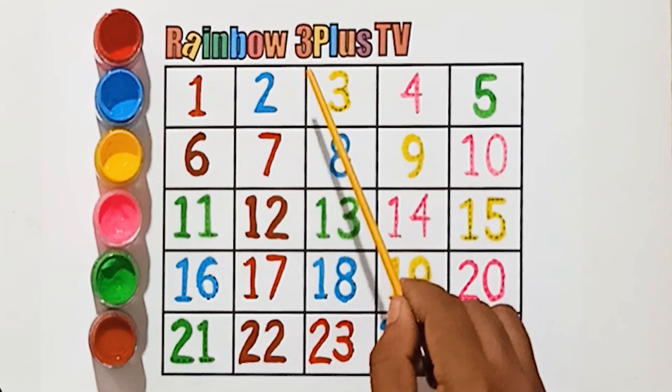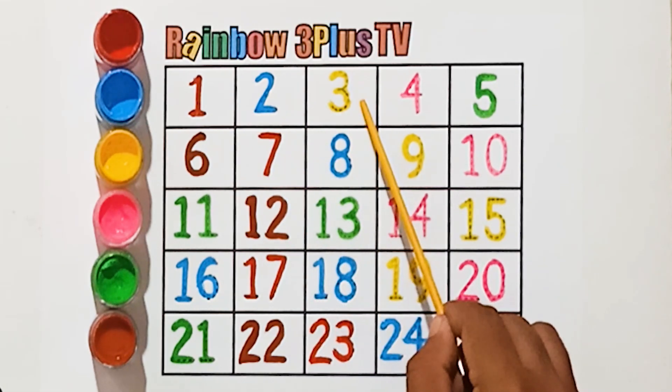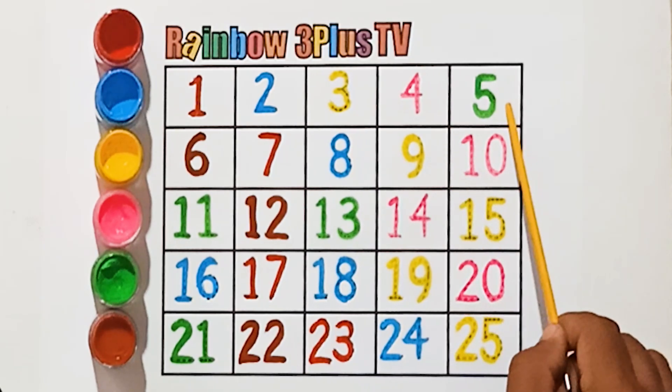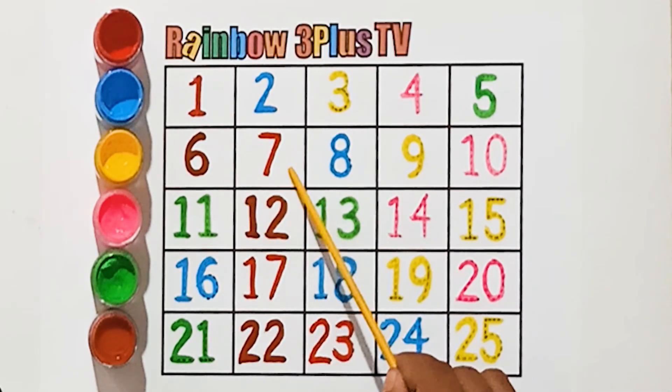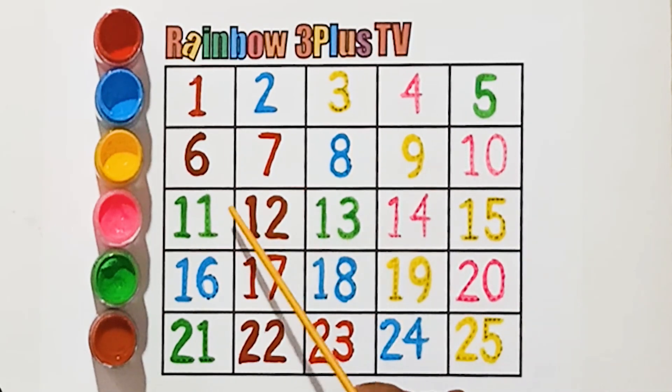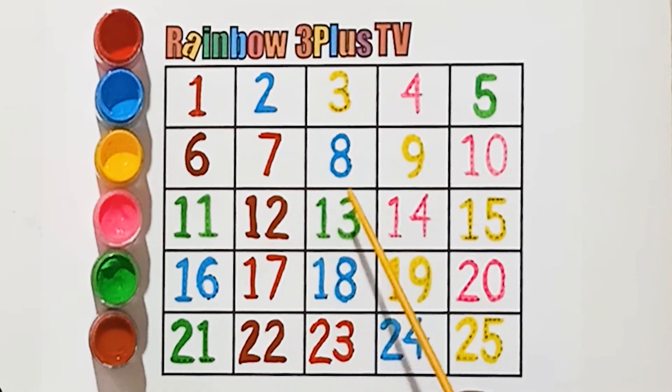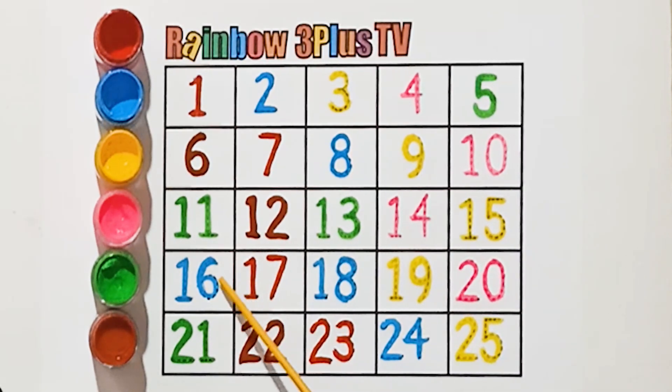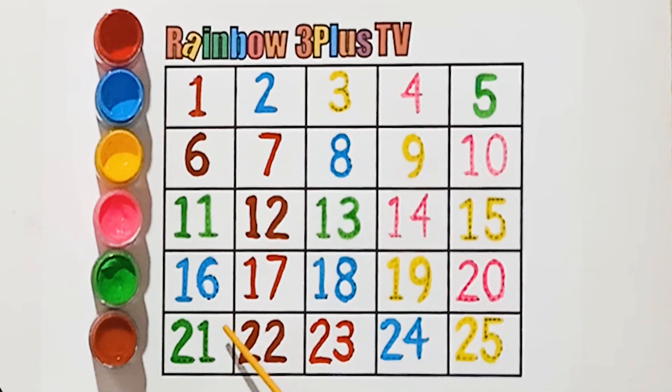1, 2, 3, 4, 5, 6, 7, 8, 9, 10, 11, 12, 13, 14, 15, 16, 17, 18, 19, 20, 21, 22, 23, 24, 25.